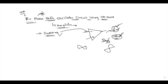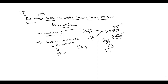The feedback network consists of three RC networks. Each RC network provides 60 degrees of phase shift. Three RC networks together provide 3 × 60 = 180 degrees phase shift, which satisfies the requirement for the RC phase shift oscillator.